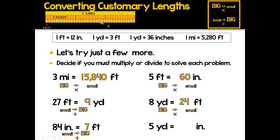And the last one: five yards is how many inches? Yards are very long compared to itty bitty inches — there are 36 inches in a yard. Going big to small, we multiply: five yards times 36 equals 180 inches. Remember — big to small means multiply, small to big means divide. Know that there are 12 inches in a foot, three feet in a yard, 36 inches in a yard, and 5,280 feet in a mile, and you'll be in good shape.